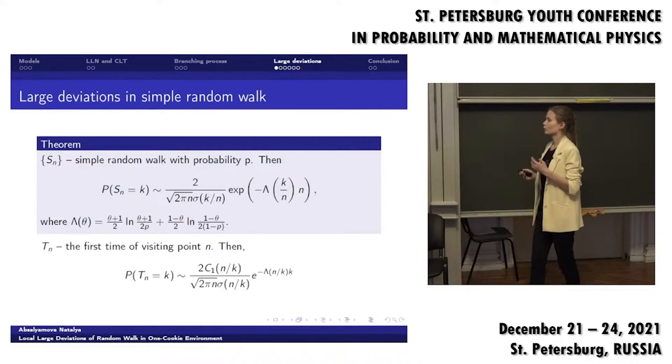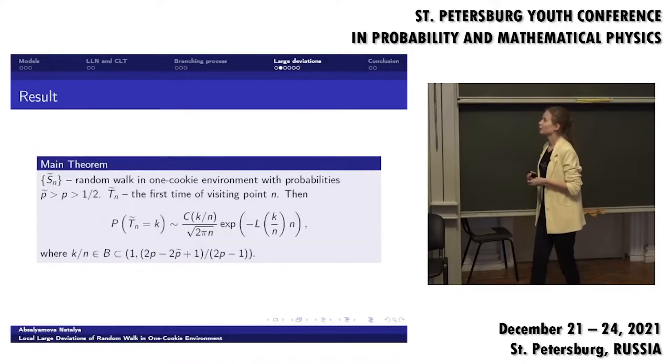But when we'd like to compare this result with the result in one-cookie environment, then we reformulate the formula to T_n. T_n is the first time of visiting point n, so-called hitting moments. And the theorem changed a little bit, but only on some C1 of n factored by k. And the result for one-cookie random environment looks kind of the same, but formulas for rate function and for constant will be much more difficult.